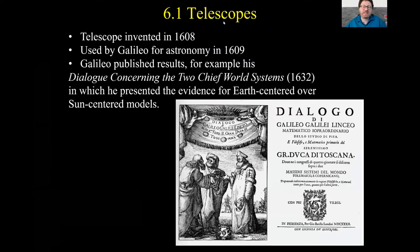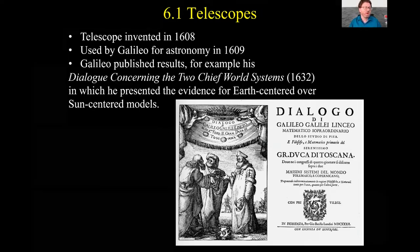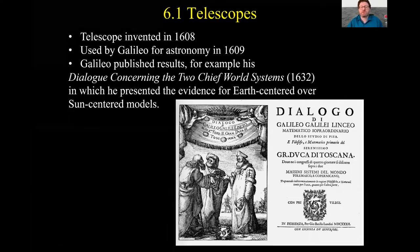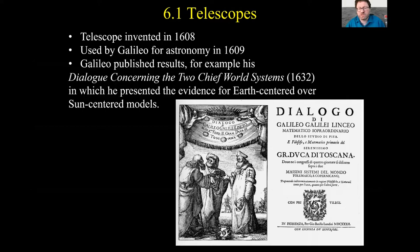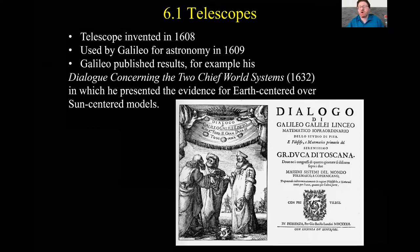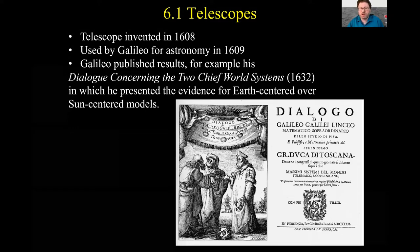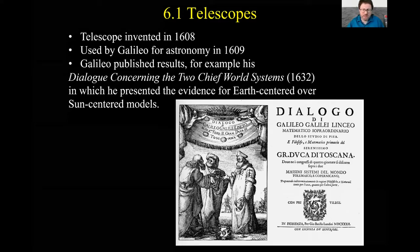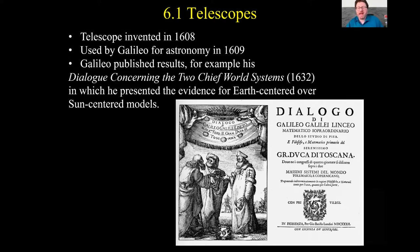The telescope was invented in 1608, and it was first used by Galileo Galilei just over 400 years ago in 1609 to do astronomical observation. He observed the phases of Venus, looked at the moons around Jupiter, the craters on our own moon and so on. He published his results in this dialogue concerning the two chief world systems, in which he presented the evidence for an Earth-centered, not a sun-centered model of the universe. The Roman Catholic Church didn't take kindly to the book, and they basically put him on house arrest until he passed away.